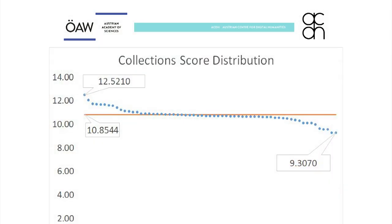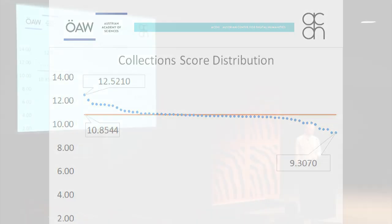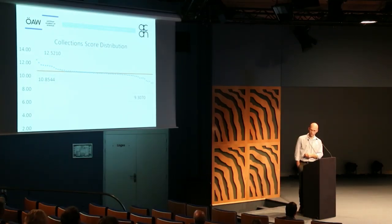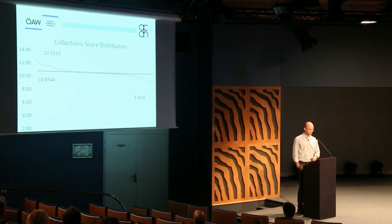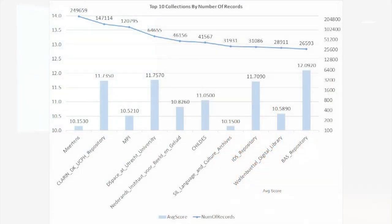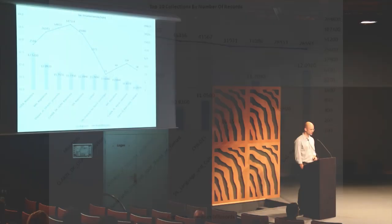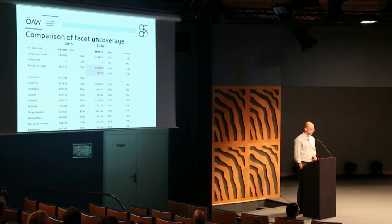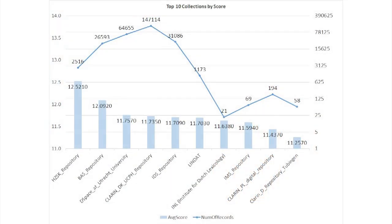Similar numbers for statistics on the collections. The spread is actually not so bad — we are between 9.3 and 12 with an average of 10.8. But obviously there are probably some easy criteria to gain score on. Overall the numbers are not so bad, so the question is why we still have big problems in the VLO.